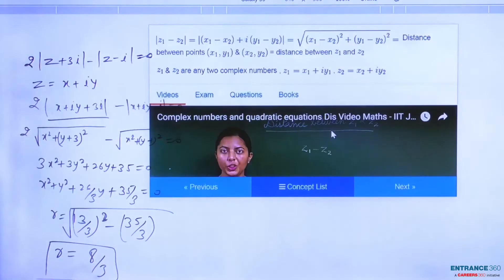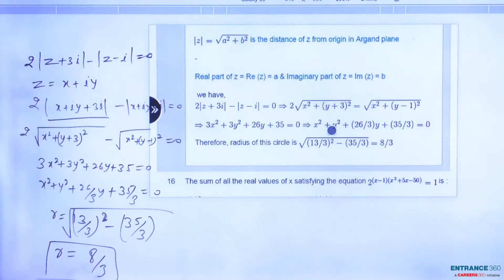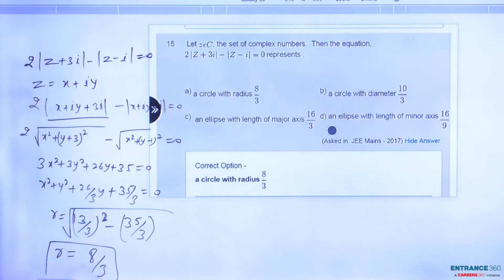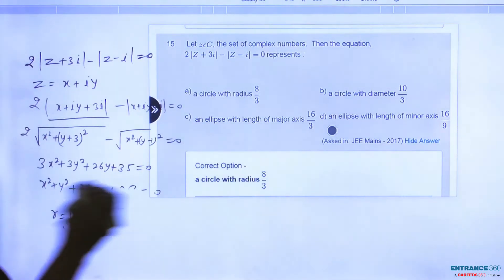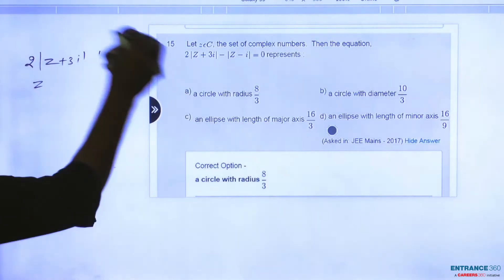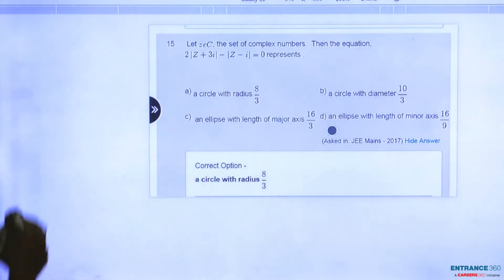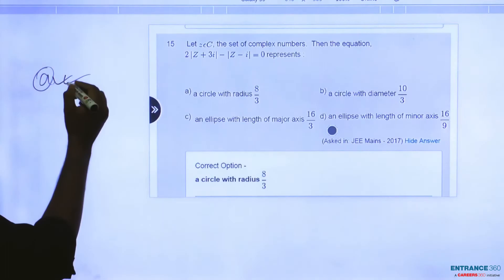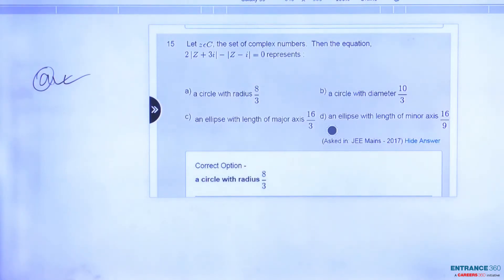When we go through the options, then you can pick one option. A circle with radius 8/3. We can say easily option A would be the correct option. A circle with radius 8/3.